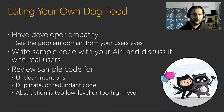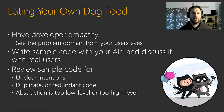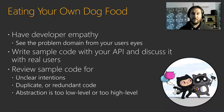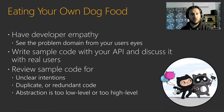It goes without saying that we have to have developer empathy. We have to be the first people to eat our own dog food and see the problem domain from the user's eyes. It's too easy to write libraries in your ivory tower and never understand how they're to be used. I highly recommend being the first person to write sample code that uses your API and discuss that code with real-world users. Once you start writing sample code, you can identify unclear intentions, duplicate or redundant APIs, or abstraction that's too high or too low level. That sample code also becomes great documentation.